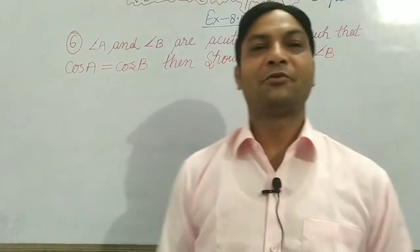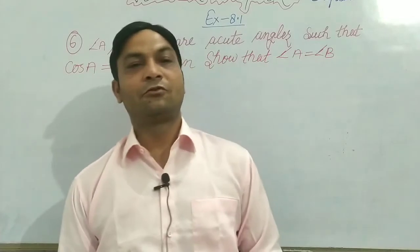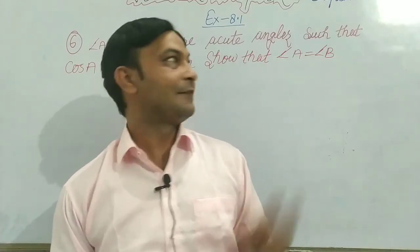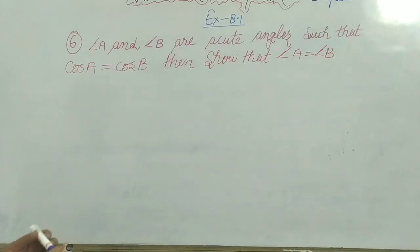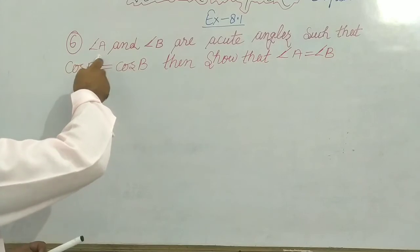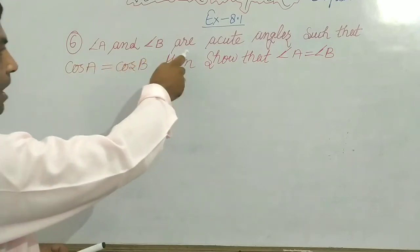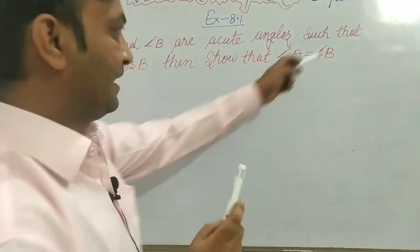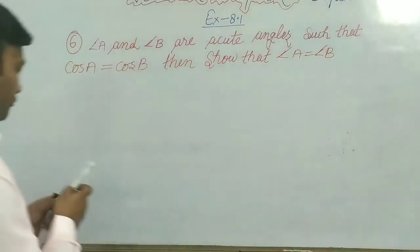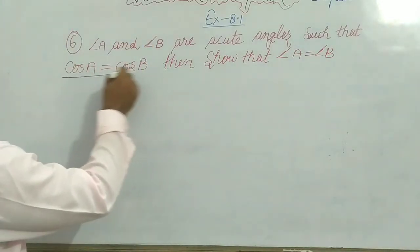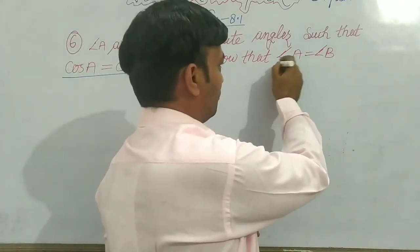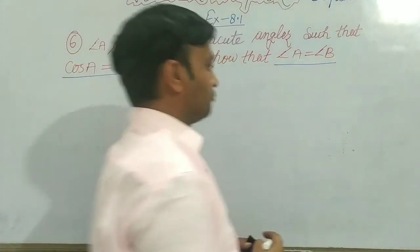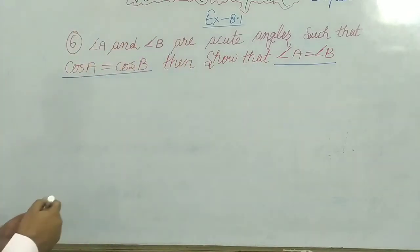Hi everyone, hope you are fine. Today we are going to deal with Exercise 8.1, Question number 6, Class 10 Mathematics, Chapter 8 Trigonometry. The question states: angle A and angle B are acute angles such that cos A equals cos B. We need to show that angle A equals angle B.